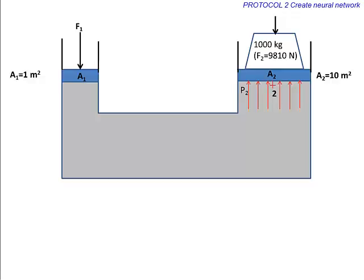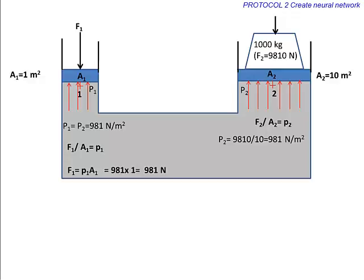Since the hydrostatic pressures at same horizontal locations are the same, the pressure at locations 1 and 2 will be same. This pressure times the area 1 will be the balancing force F1 at location 1.